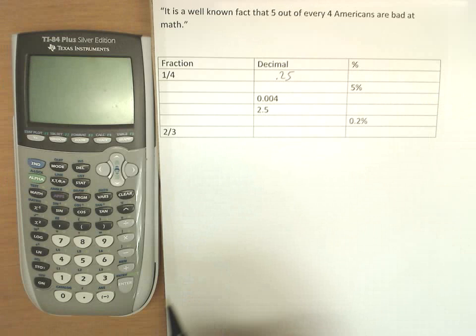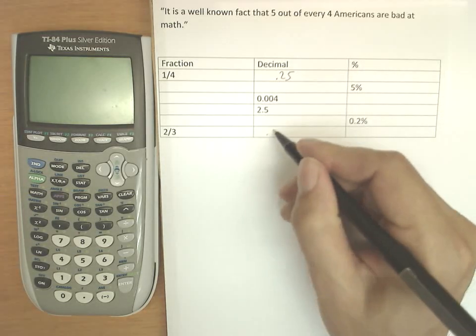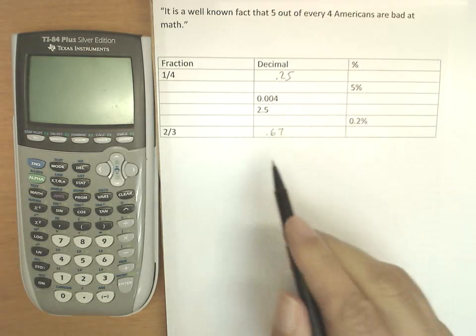2 by 3, and I get 0.66 forever, which, depending on the problem, we would eventually round off. We would round it up to 0.67.